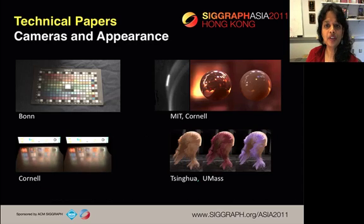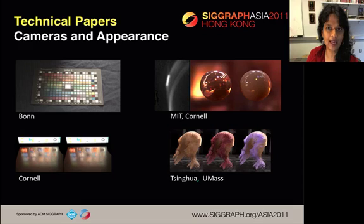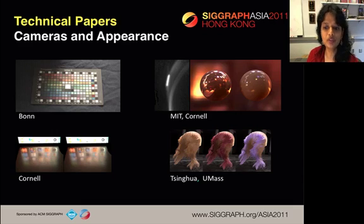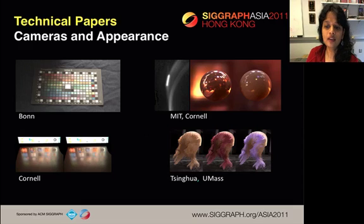In the Cameras and Appearance session, we have a practical approach to calibrating spectral characteristics of trichromatic cameras. A novel time-of-flight system for measuring BRDFs and reflectances that uses femtosecond cameras and lasers that measure light as it travels. A fast appearance capture method that uses a single photograph with step illumination to estimate a BRDF and mesoscale texture. And an interactive hair rendering and editing paper.